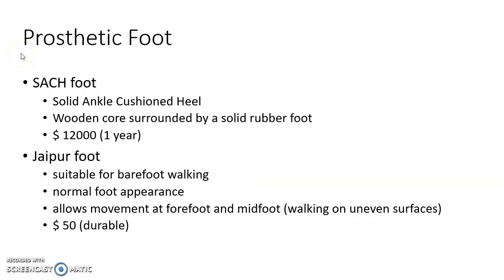Now let us see about terminal device in case of lower limb prosthesis. The terminal device in case of lower limb prosthesis is called as prosthetic foot. There are two types of prosthetic foot: SACH foot and Jaipur foot. SACH stands for solid ankle cushioned heel. It is basically wooden core surrounded by a solid rubber foot. The cost is around $12,000 and it is durable only for one year.